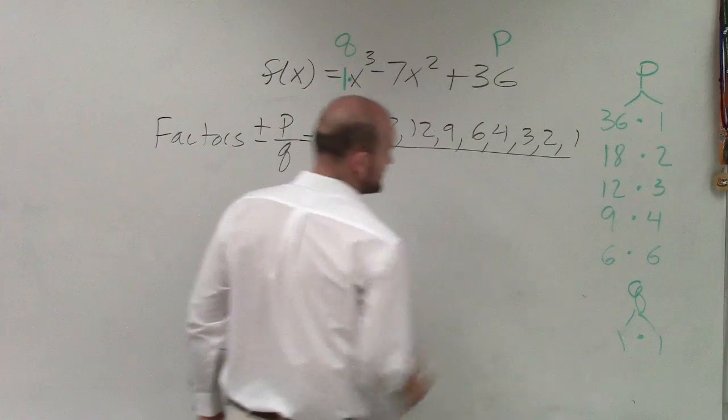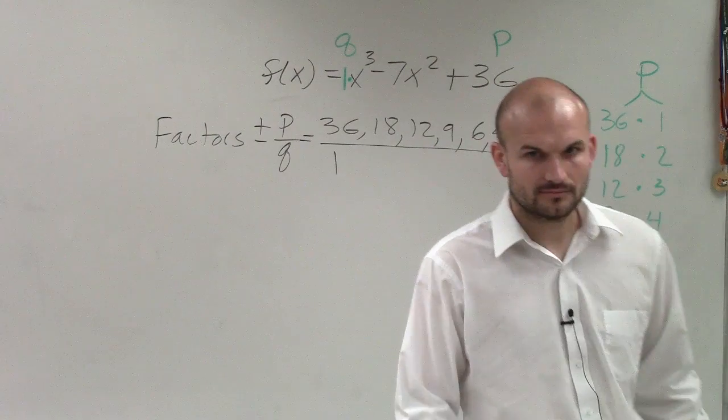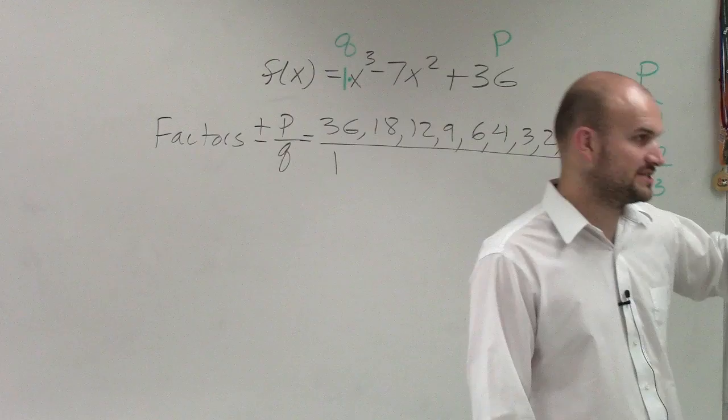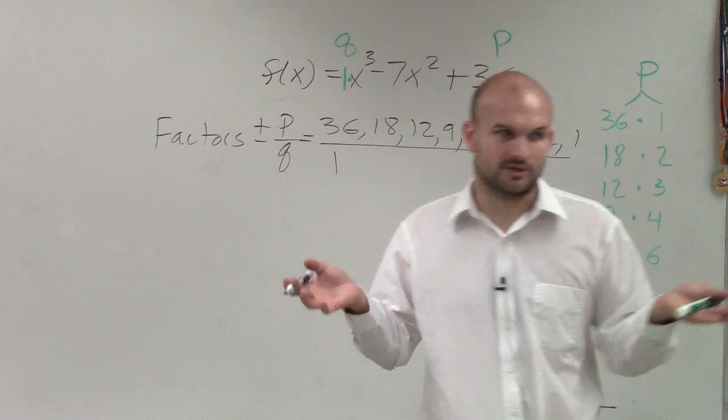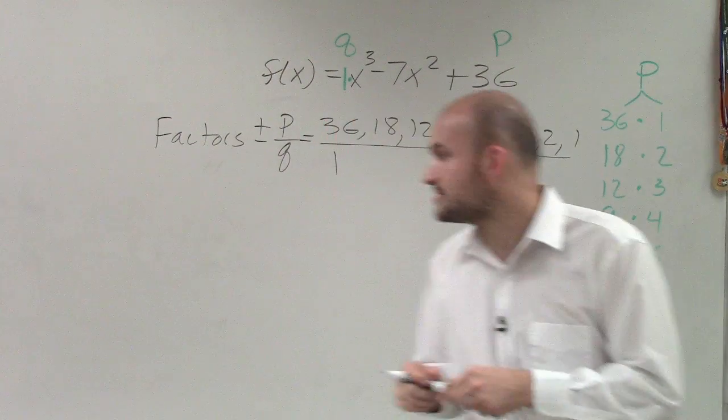Then we take the factors of q, 1. You don't need to repeat them. So if you have 36 divided by 6, you have 36 over 6, and you have 6 over 1, the answer is both 6. You don't need to write it twice. You only need to write it once.